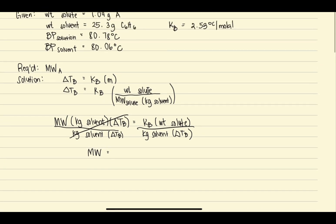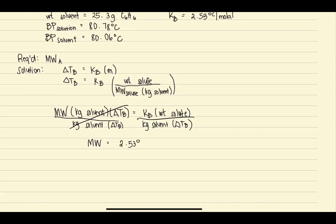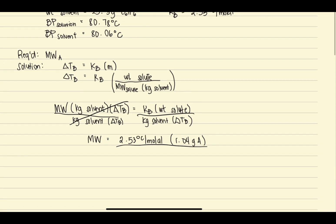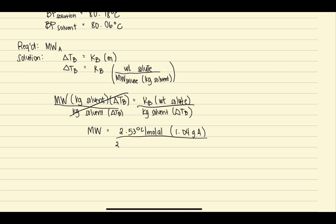So we have the molal constant, 2.53 degrees Celsius per molal, times the weight of the solute, which is 1.04 grams of unknown solute. Then the weight of the solvent in kilograms — we have to convert the weight of the solvent into kilograms: for every 1 kilogram there are 1000 grams. Then we multiply by the change in boiling point.